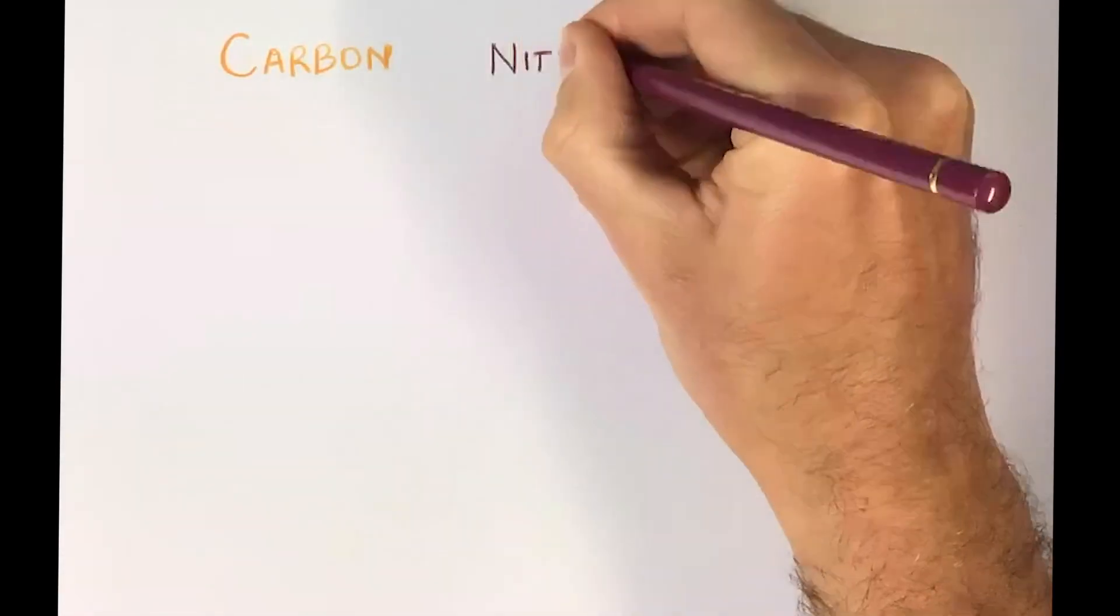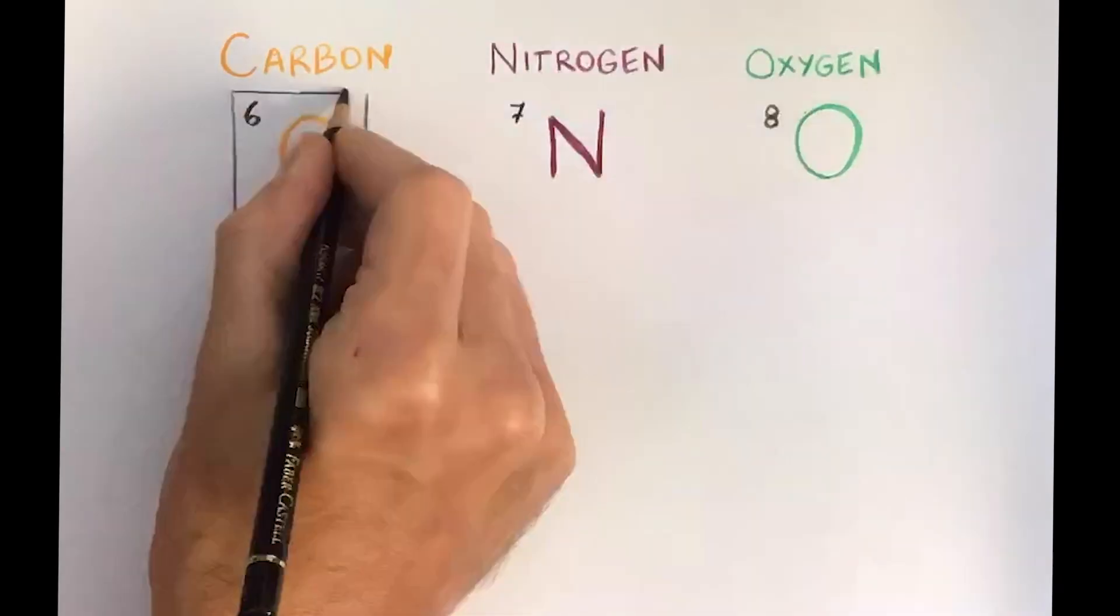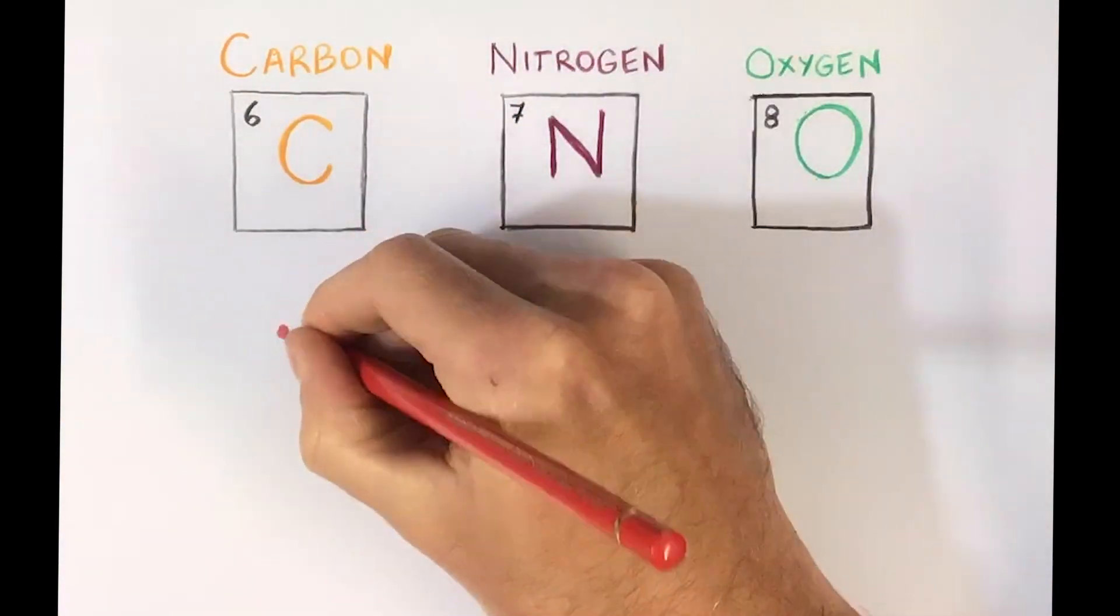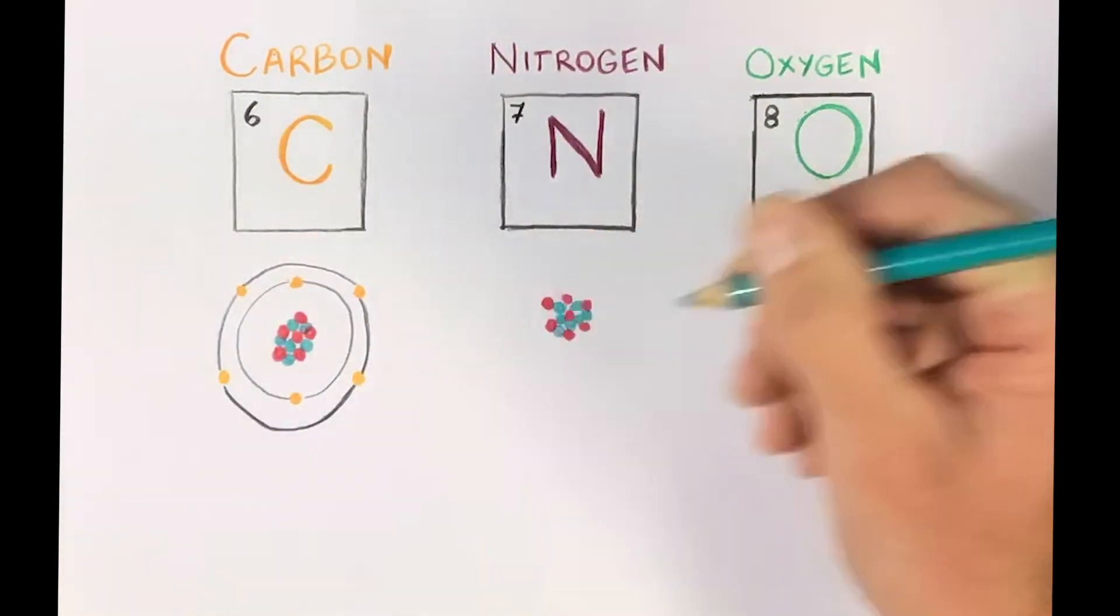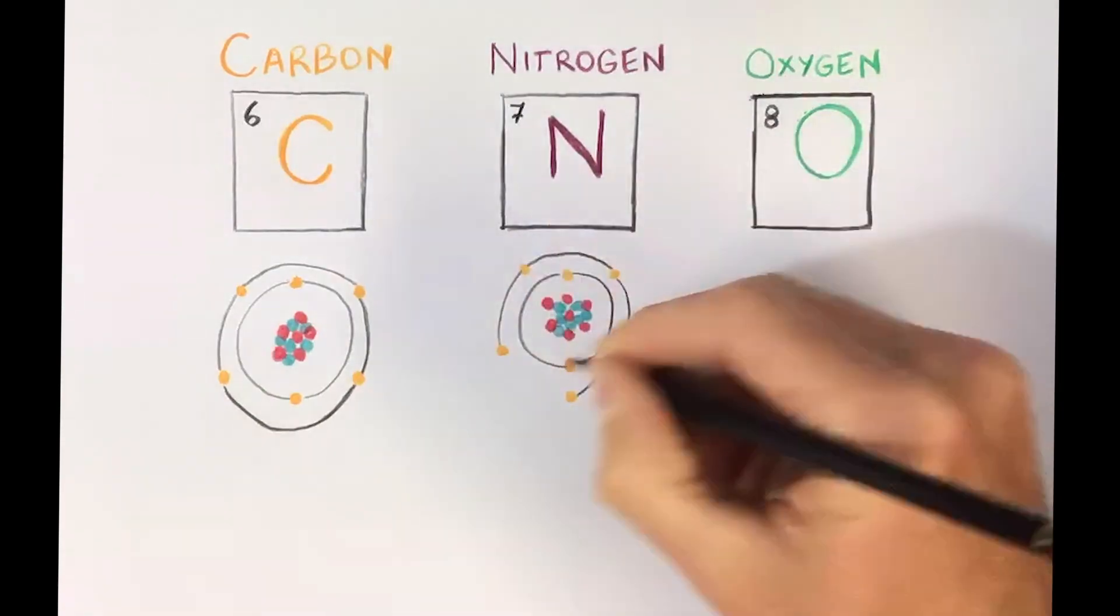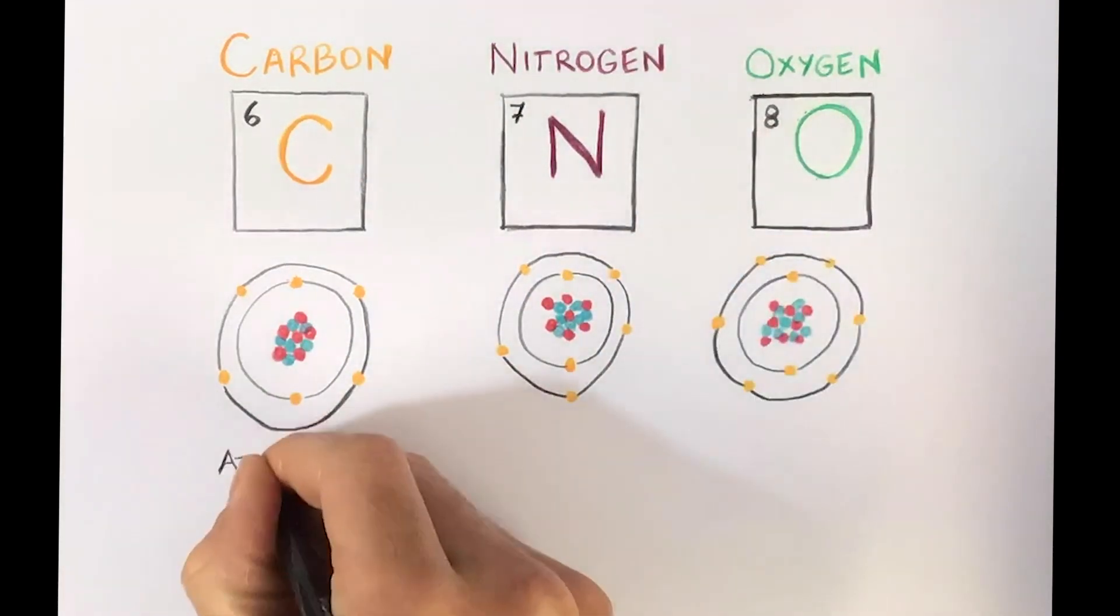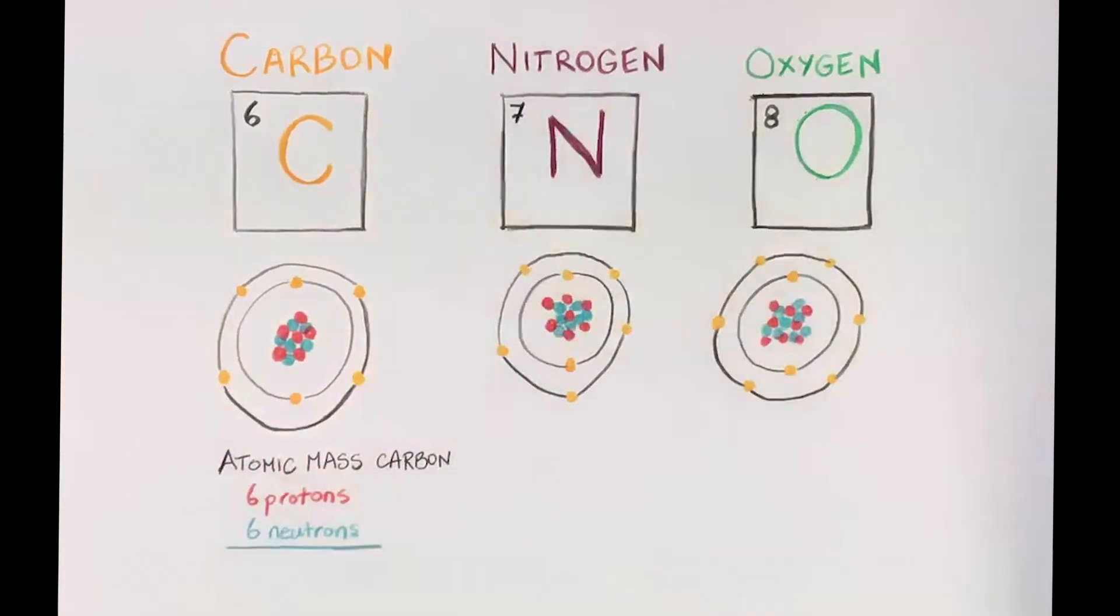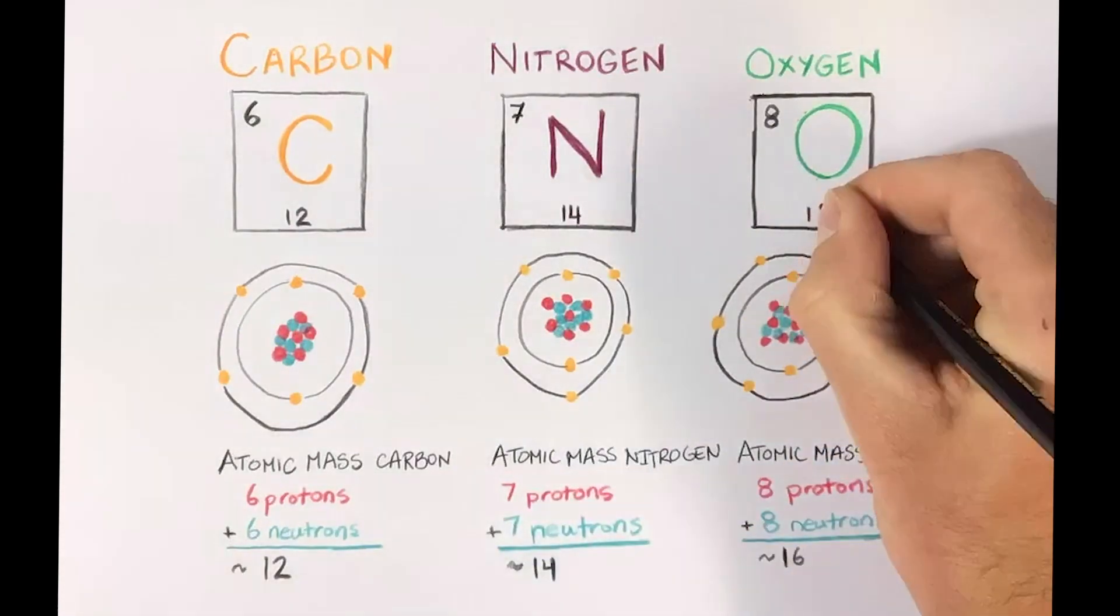The answer to this question can be found by looking at the atoms of elements 6, 7, and 8 on the periodic table, carbon, nitrogen, and oxygen. Carbon is made up of 6 protons and 6 neutrons, giving it an atomic mass of 12. It also has 6 electrons, but remember that relative to the size of the nucleus, the electrons are extremely small. Meanwhile, nitrogen has 7 protons and 7 neutrons, bringing its atomic mass to about 14. Oxygen has 8 protons and 8 neutrons for a total of 16.